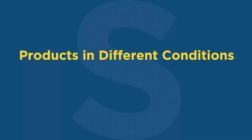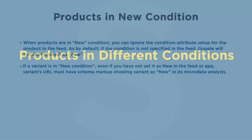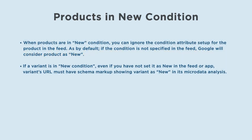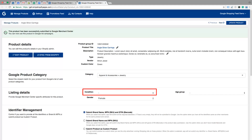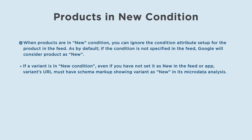Now we will see products in different conditions. Products in new condition: when products are in new condition, you can ignore the condition attribute setup for the product in the feed. As by default, if the condition is not specified in the feed, Google will consider the product as new.